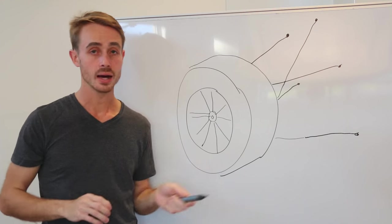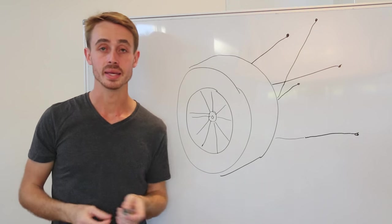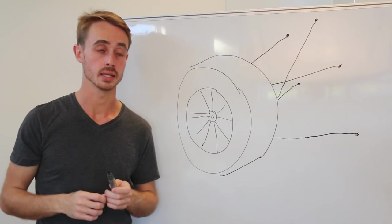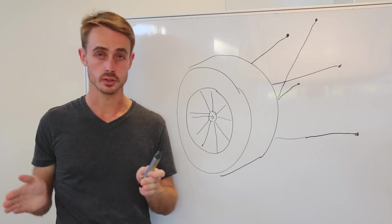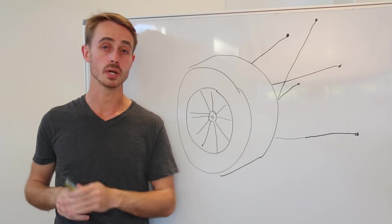Specifically we're going to be looking at caster, camber, kingpin inclination angle and scrub radius. These are all different concepts so I'm going to split them up into four different videos.